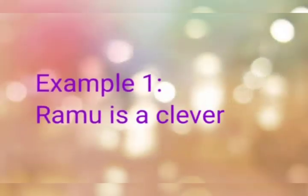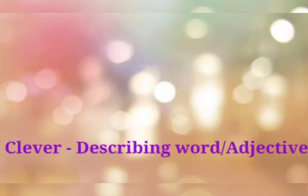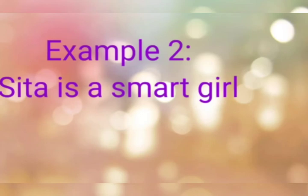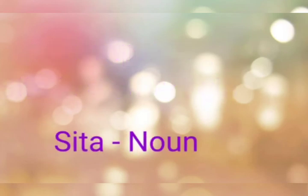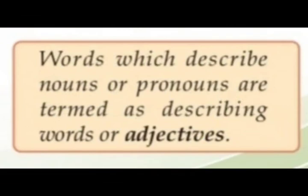First example: Ramu is a clever boy. Here Ramu is the name of a person, so Ramu is a noun, and the word clever is used to describe the noun. So clever is a describing word or adjective. Like that, Sida is a smart girl. Here Sida is a noun, and the word smart is used to give more information about the noun. So smart is a describing word or adjective. Therefore, words which describe nouns or pronouns — he, she, etc. — are termed as describing words or adjectives.